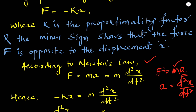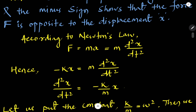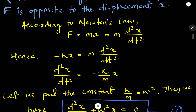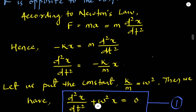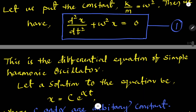Therefore, minus kx equals M times d²x/dt², which gives d²x/dt² equals minus kx over M. Setting the constant k over M equal to omega squared (ω²), the equation reduces to d²x/dt² plus ω²x equals zero. This is the second-order differential equation of the simple harmonic oscillator.